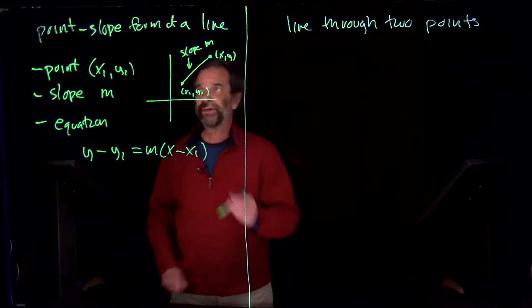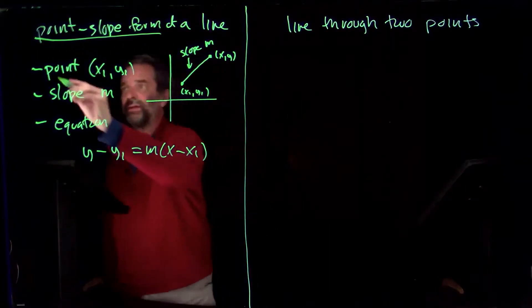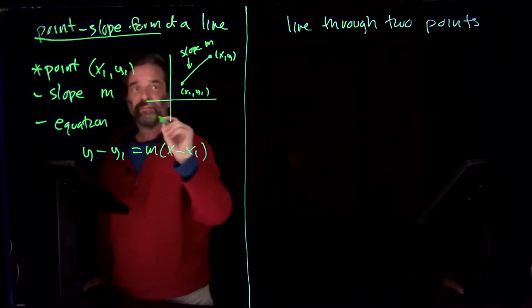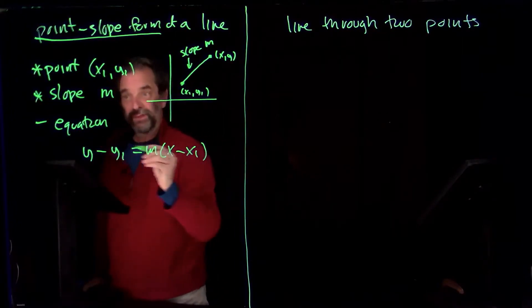So now, let's look at the point-slope form. For the point-slope form, you need a point on the line, say here, a slope of the line, say m.